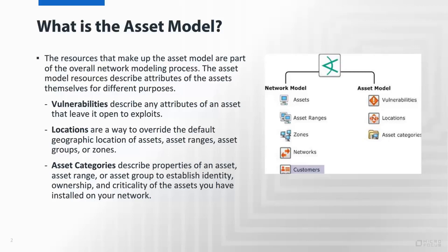Vulnerabilities are just what you think they are. Locations contain the geographical information that are used to drive the map views that you see within ESM dashboards. Asset categories is the largest portion, giving you a dynamic schema that you can associate to assets in order to group them in any given way, such as business units, priority, criticality, compliance, or virtually any other way you can think of.